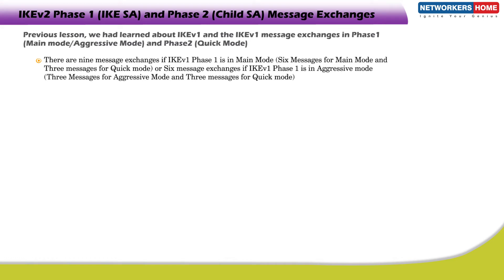If IKE V1 Phase 1 is in Main Mode, there are 6 messages for Main Mode and 3 messages for Quick Mode, or 6 message exchanges if IKE V1 Phase 1 is in Aggressive Mode — 3 messages for Aggressive Mode and 3 messages for Quick Mode. Internet Key Exchange Version 2 is the next version of IKE V1.